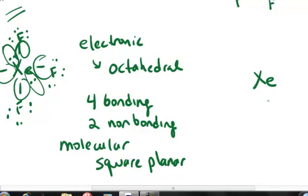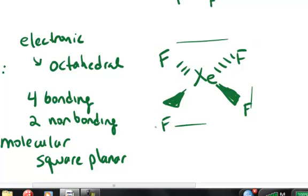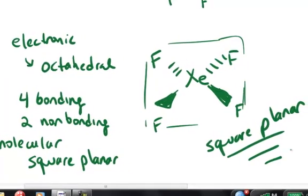So in this case, the non-bonding pairs of electrons are going to be in the axial positions. That leaves the four equatorial positions available and where my fluorine atoms would be predicted to be found. And so this is why it's called square planar because it looks like a square all in one plane. So it's square planar. You should practice some on your own.